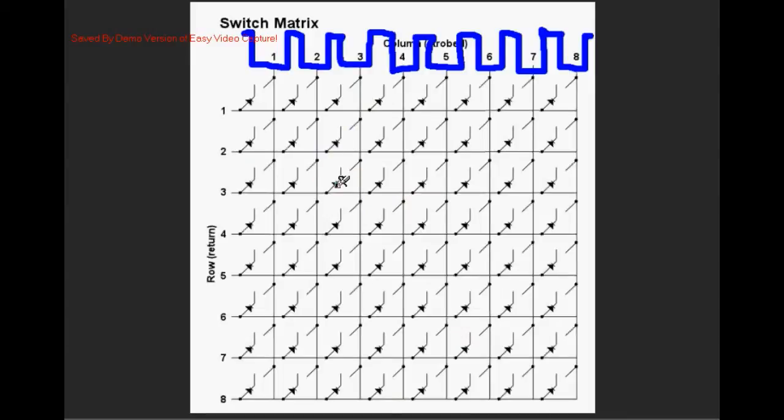So let's look at a scenario where we've got a shorted diode. Column three row three that diode is shorted and current can flow in the opposite direction.